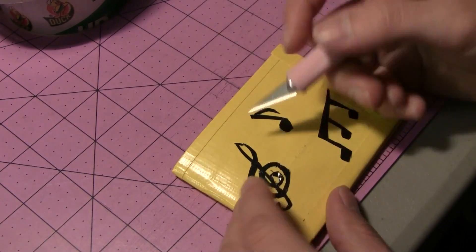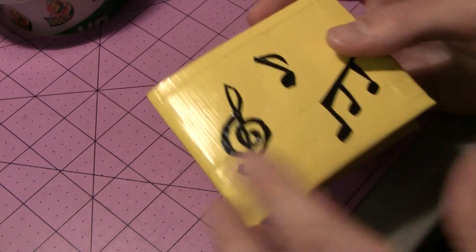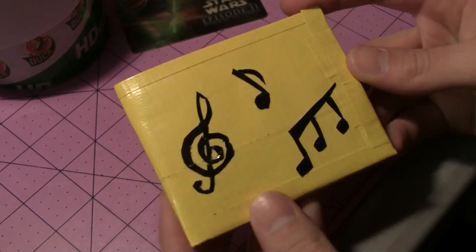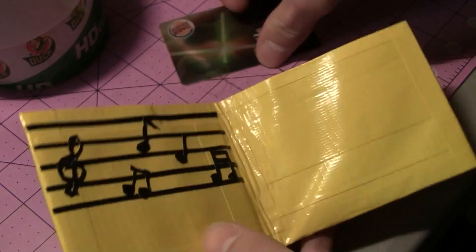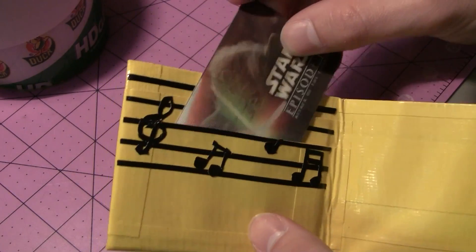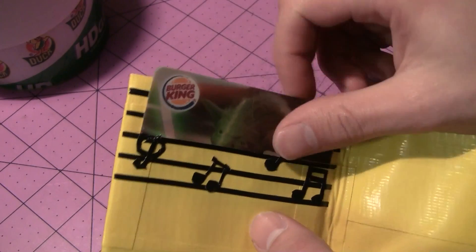Relatively simple wallet, but it does look very cool. I'll show you how the pockets disappear right now. I'll grab my Burger King card, my famous Burger King Star Wars card. I'll show you exactly, see it kind of just disappears into the wallet because those lines definitely make you focus on those and the musical notes instead of the card pockets.